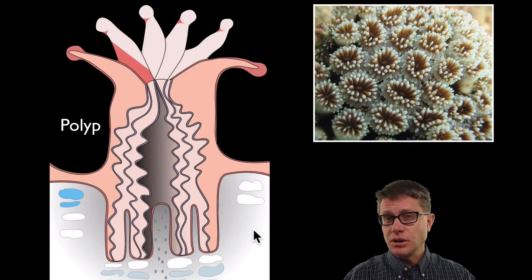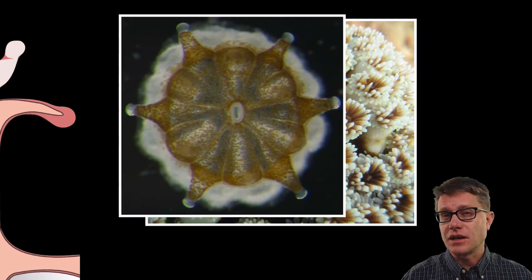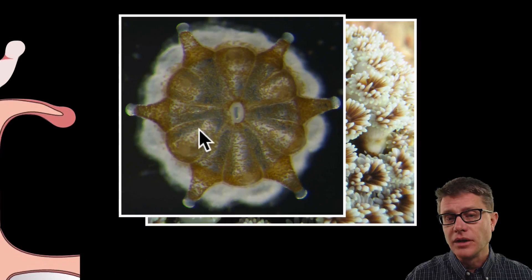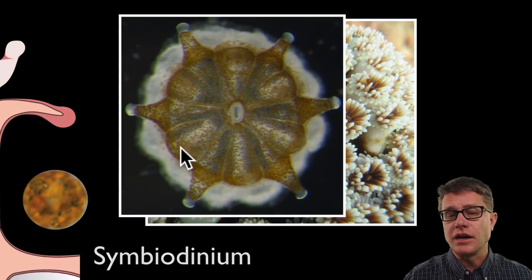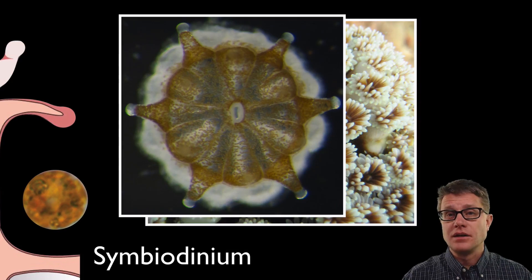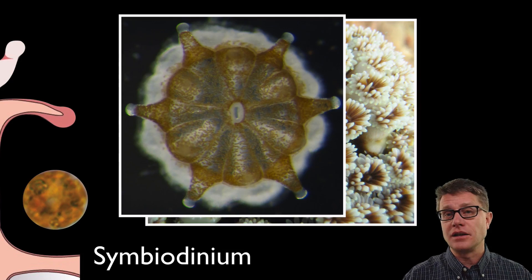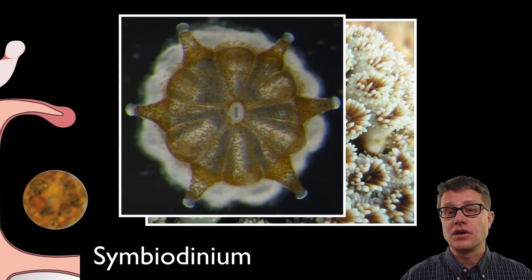But if we zoom in even more and look at the coral polyps from above, we find that the color is not coming from the coral. It is coming from these little dots which are algae — symbiodinium. These are symbiotic dinoflagellates that are found in the ocean. Sometimes they are called zooxanthellae or zoox. They live symbiotically inside the cells of the coral.